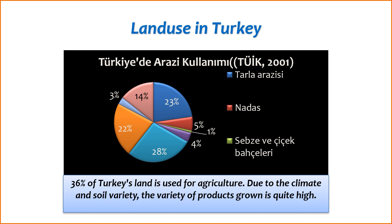4. Greenhouse cultivation — Protected agriculture: greenhouses are utilized to extend the growing season and protect crops from adverse weather conditions. This allows for the cultivation of crops throughout the year and contributes to the production of vegetables, flowers, and other high-value crops.